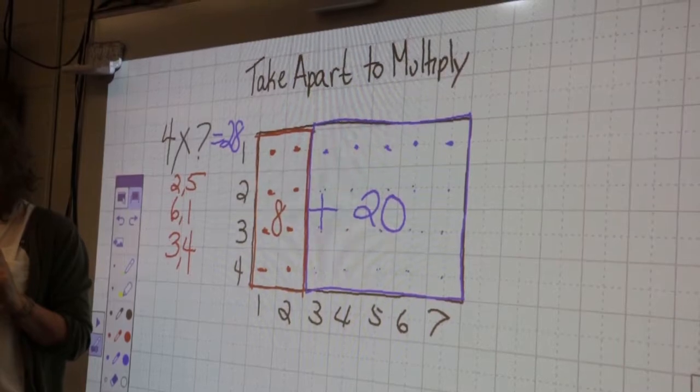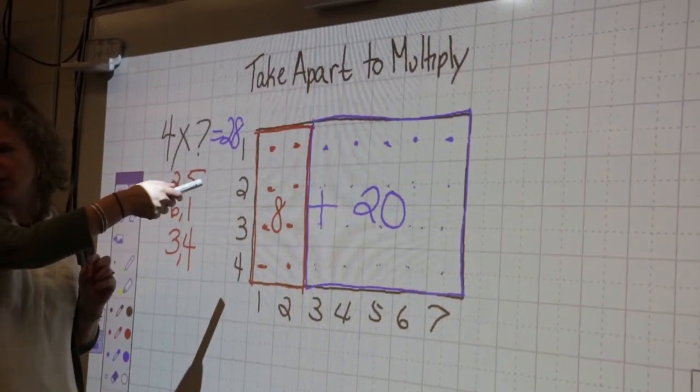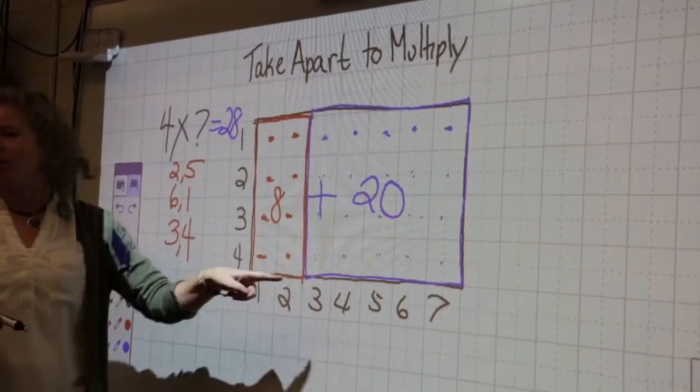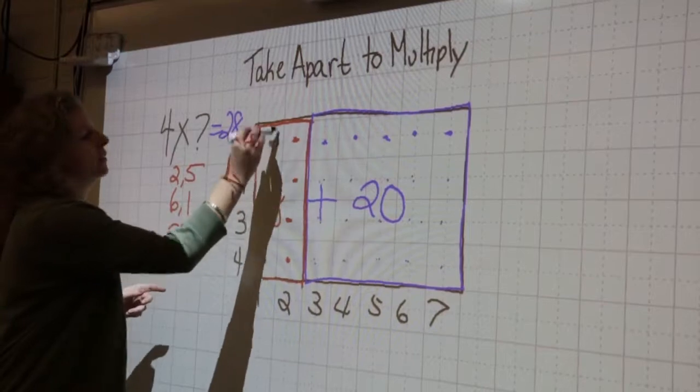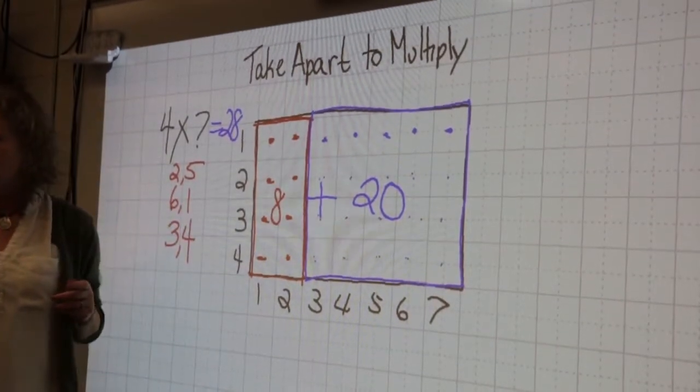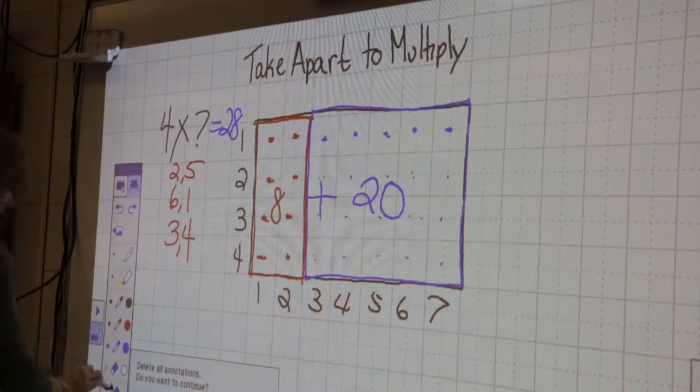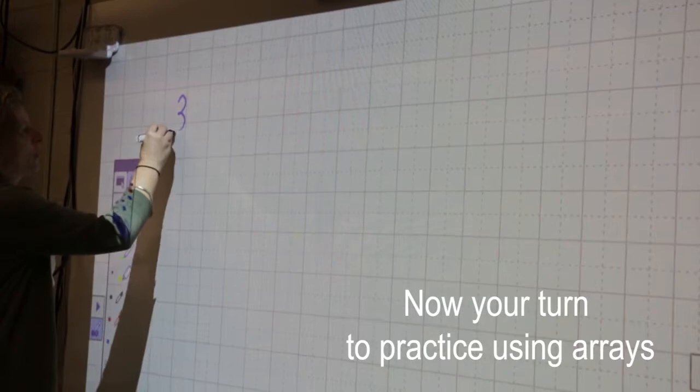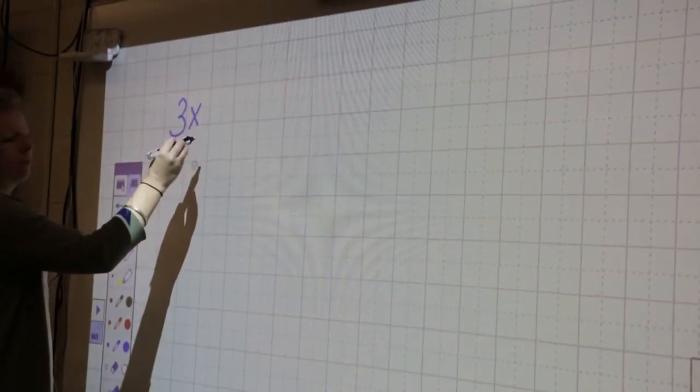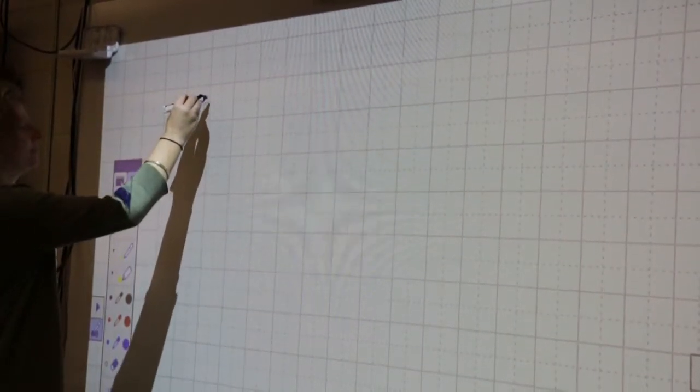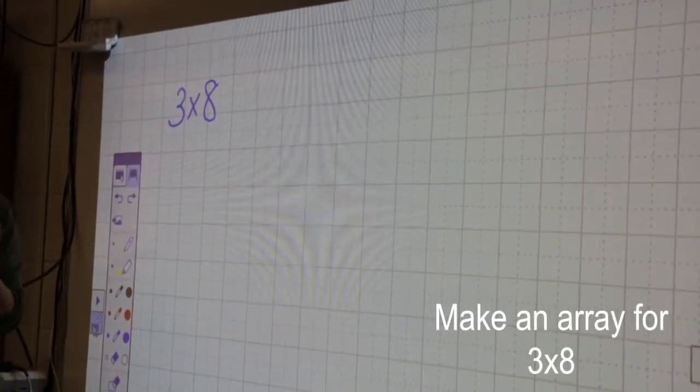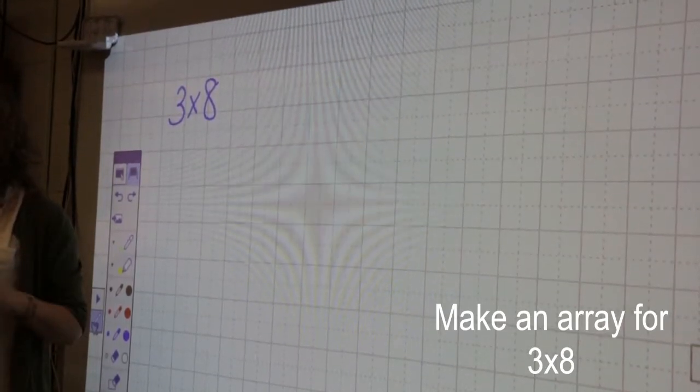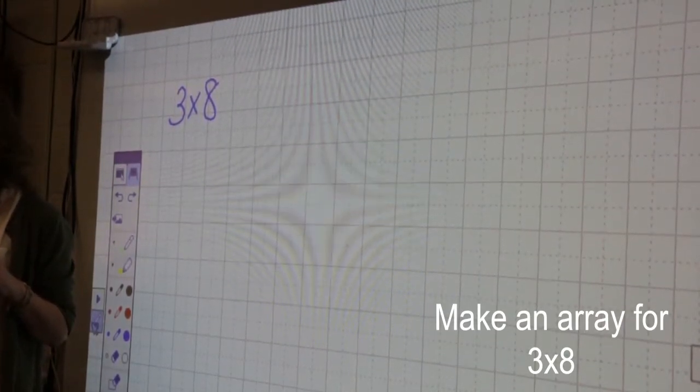I'm going to have you guys break a problem into chunks on your white board. You ready? Now, instead of making squares, you don't have the cute grids. So, maybe what you'll do is you'll make the X's instead. Are you ready to try one? I'm going to have you make an array of three times eight. Okay?